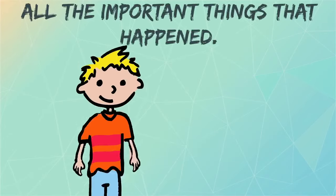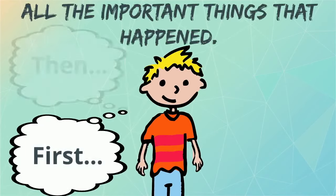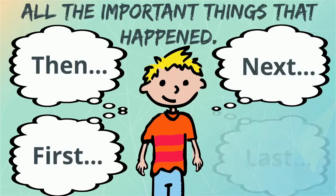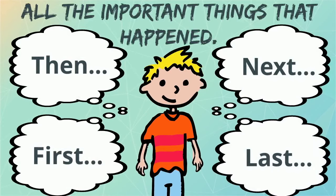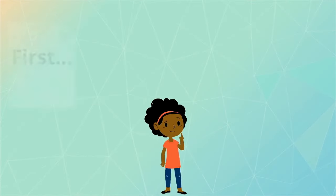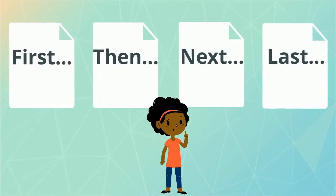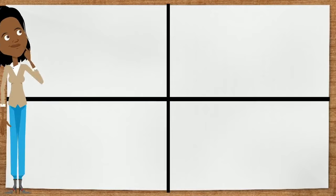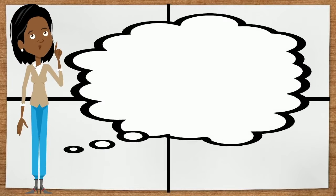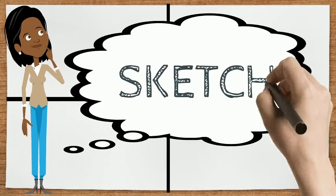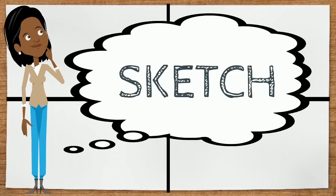First, I need to think about all the important things that happened in my story that I want to write about. Then, I'm going to think about what I should write on each page. As I think about what I'm going to write, I'm going to make a quick sketch in each box of my planning sheet to remind me of my story.